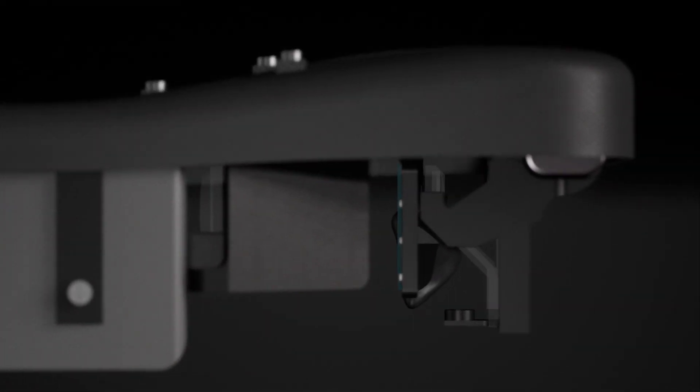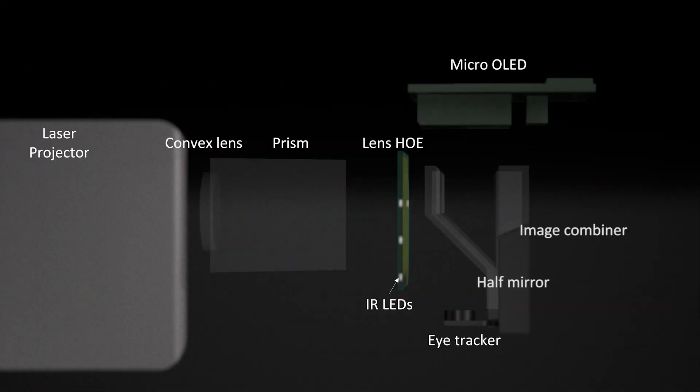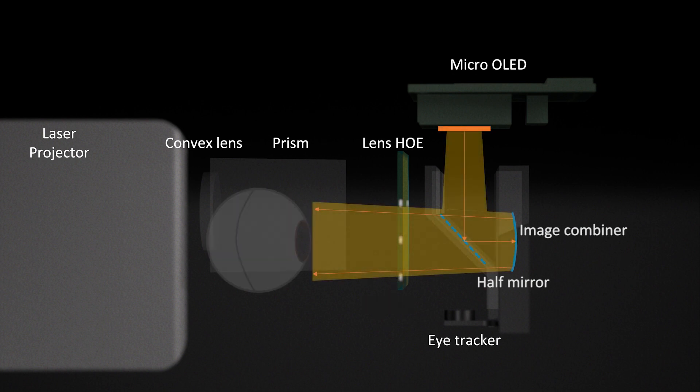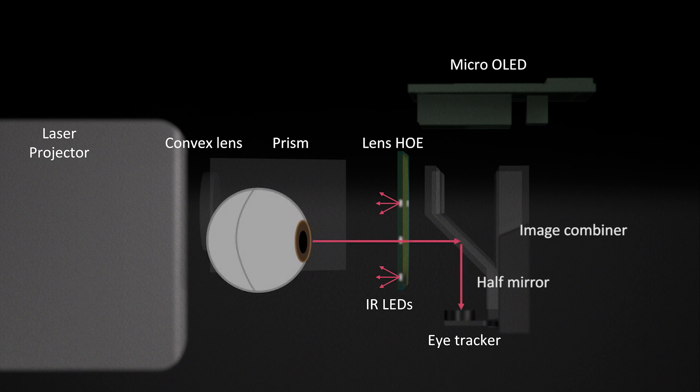In orange, we visualize the optical path of the foveal display. An image of the micro-OLED, which is also moved along with the eye, is reflected by a half-mirror and delivered to the user's eye via an image combiner.